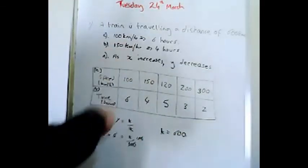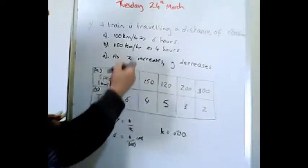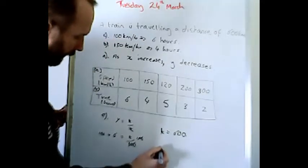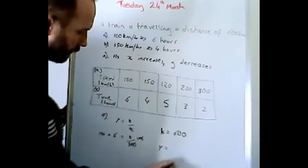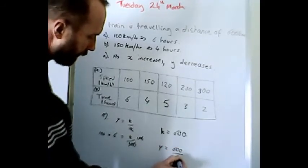Right, so put that back into our equations now. So the equation for this inverse proportion is y equals 600 divided by x.